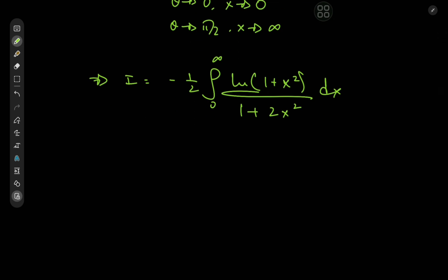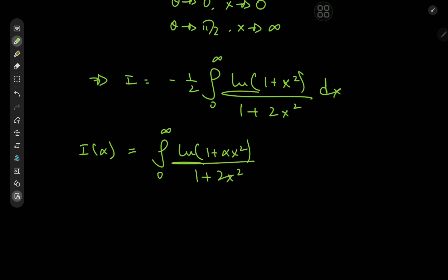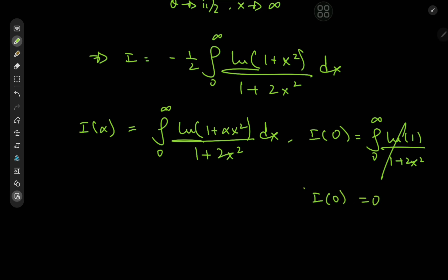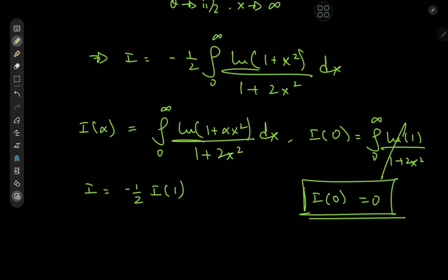To solve this, we define an integral function I(α) as the integral from 0 to ∞ of log(1 + αx²) divided by (1 + 2x²) dx. If we plug in α = 0, we get the integral of log(1)/(1 + 2x²), and since log 1 = 0, the entire thing collapses — so I(0) = 0, a very useful initial condition. The target case is negative (1/2) of I(1).